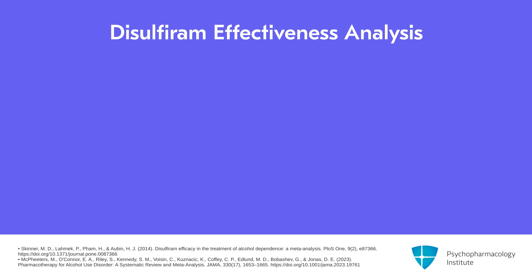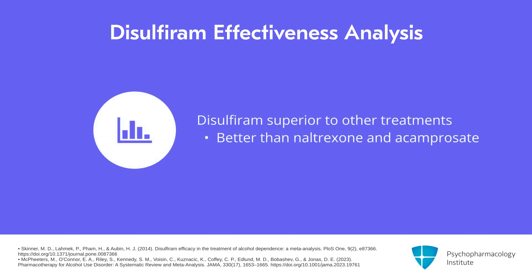In that meta-analysis, disulfiram compared to control had an odds ratio — referred to as G — of 0.77, compared to naltrexone at 0.76, acamprosate at 0.43, and placebo. So when you can ensure compliance, this is a very effective agent.